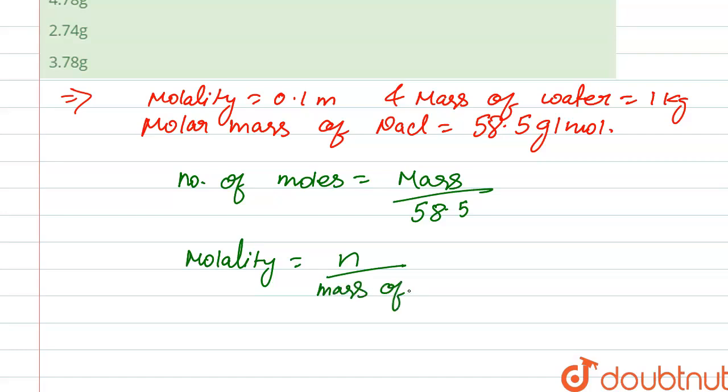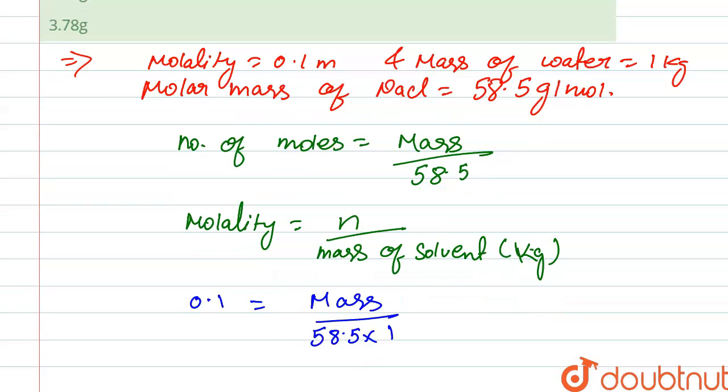We substitute here. Molality is given, that is 0.1, and number of moles of solute, that is mass upon 58.5. Mass of solvent, that is 1 kg.